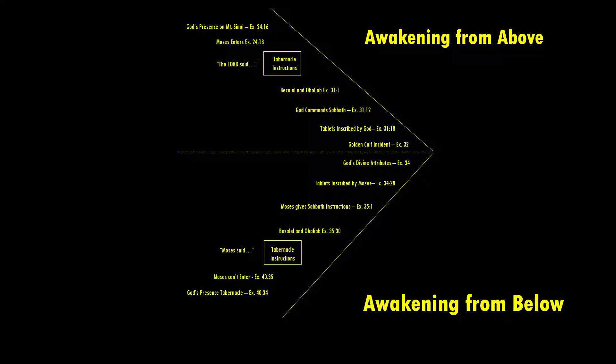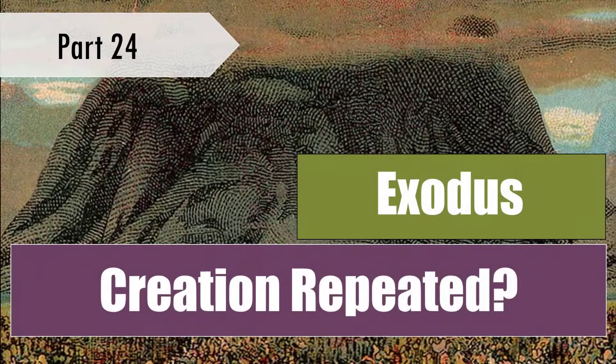Within the structure, we find something very interesting: creation itself is being revisited. Building the tabernacle is creating a space for the presence of God to dwell with the Israelites, and in this sense it mimics creation as a dwelling place for God's presence and his people. As we follow Exodus to its close, we see a motif of renewal, rebirth, or re-creation. God and his people are back together, stepping forthrightly into the future together.